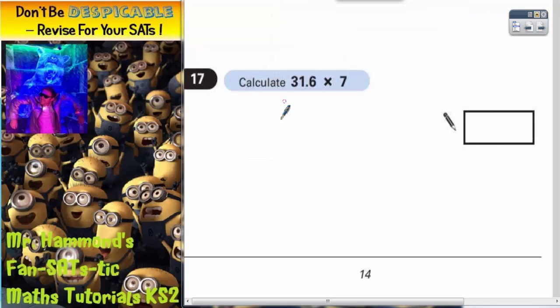Question 17. Calculate 31.6 times by 7. This should be extremely easy marks as long as we stay calm and do a column method. So we want 31.6 multiplied by 7.